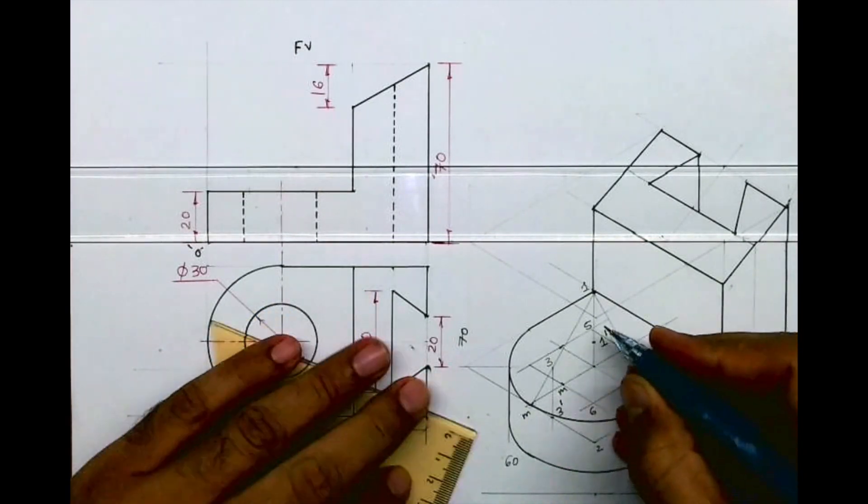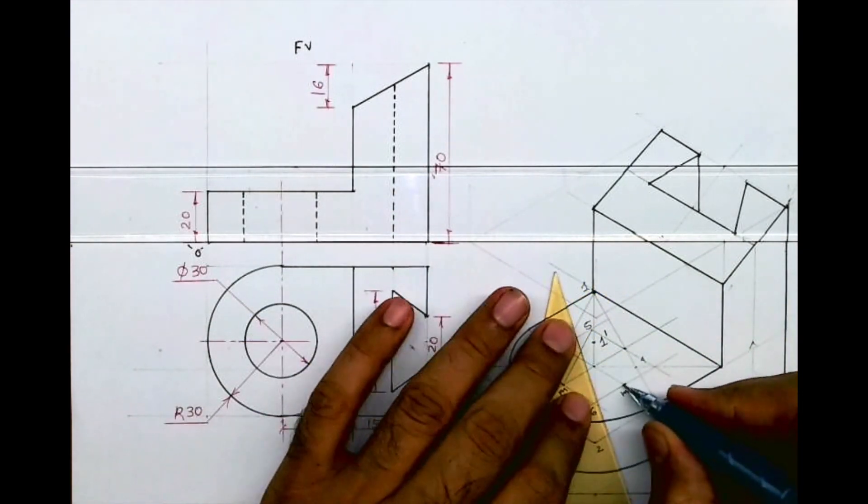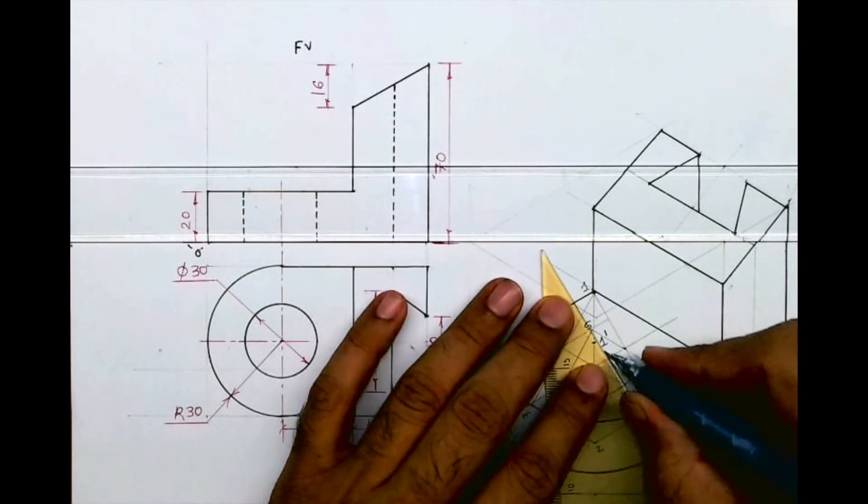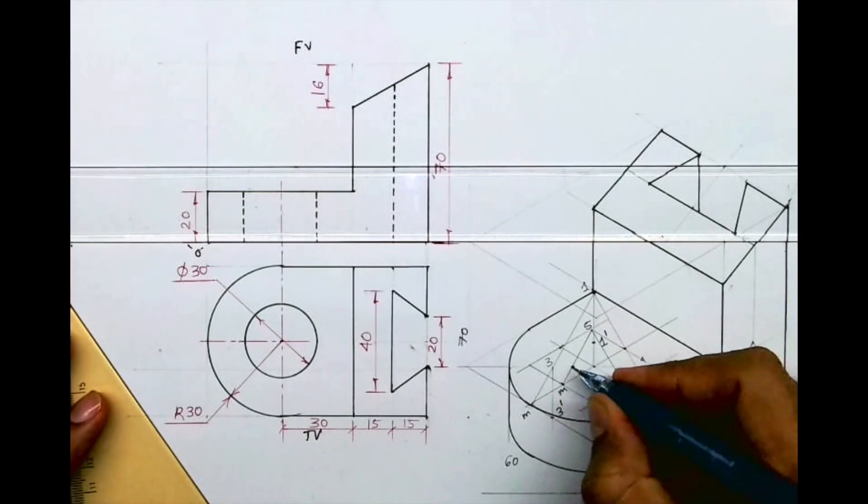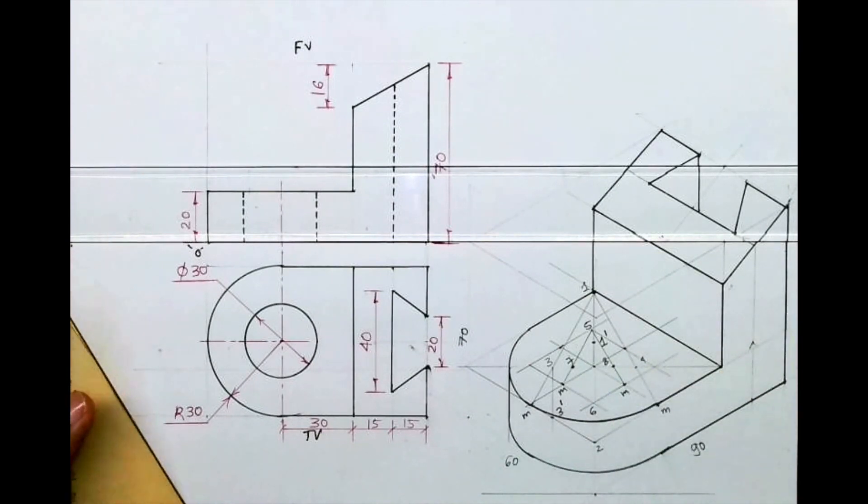M, m, again we'll join 5 to m. This is point number 7, this is point number 8. Now again we'll use 4 center method to draw circle.